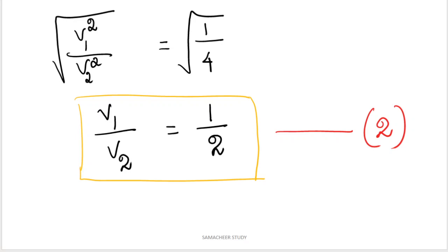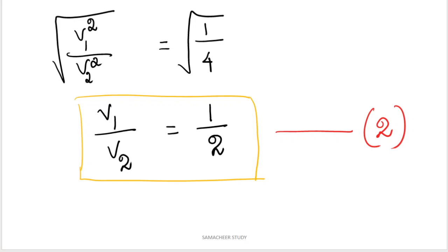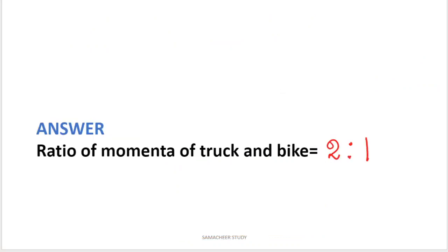Already P1 by P2 equals 4 into V1 by V2. Now substituting V1 by V2 equals 1 by 2: 4 into 1 by 2 equals 2 by 1. So the ratio of momentum of the truck and bike is P1 to P2 equals 2 is to 1.